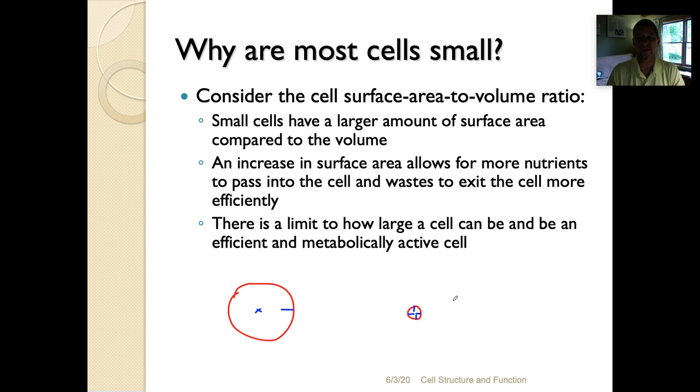It allows this to happen very efficiently. The larger a cell becomes, the smaller the surface area to volume ratio becomes, and it becomes much more difficult for a cell to survive because it can't diffuse oxygen and nutrients in and it can't get rid of carbon dioxide and other metabolic wastes. So there's a limit to how big a cell can be and still be able to be efficient and metabolically active.